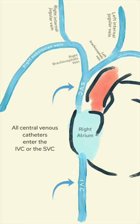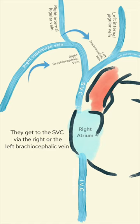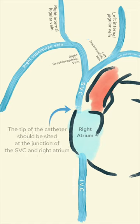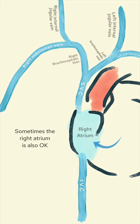All central venous catheters enter the IVC or the SVC. They get to the SVC via the right or the left brachiocephalic vein. The tip of the catheter should be sited at the junction of the SVC and the right atrium, though sometimes the right atrium alone is also acceptable.